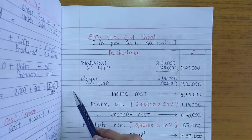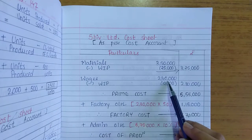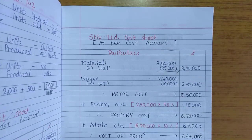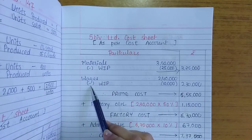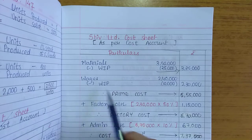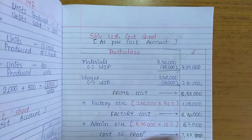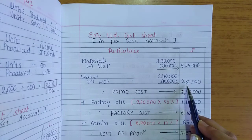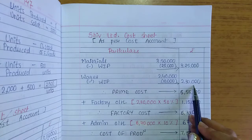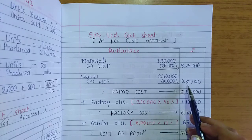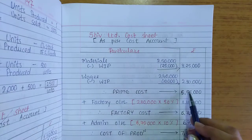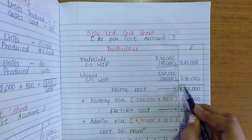For wages, the P&L account shows Rs. 2,40,000, but work in progress of wages is also given as Rs. 10,000. Deduct that, so wages in the outer column come to Rs. 2,30,000. There are no direct expenses, and no common work in progress for both together — they are given separately for materials and wages. Prime cost therefore comes to Rs. 5,55,000.